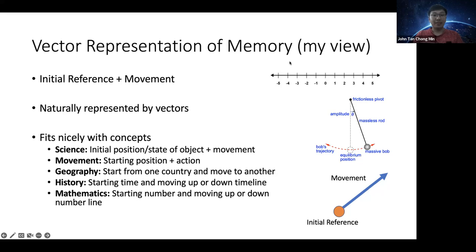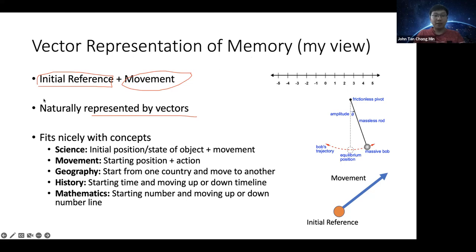This is something I've been thinking about for months. I've been thinking about how memory is encoded in the brain, and I've come to the view that memory might be encoded with two different components. The first is the reference point, and the second is the movement. Both of these can be represented by vectors — the initial reference point as a vector, and the movement also as a vector. In Cartesian coordinates, it's as though you are shifting the initial point by a certain movement to another point.